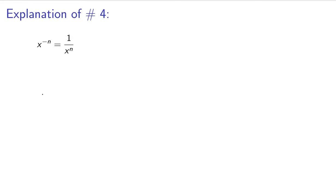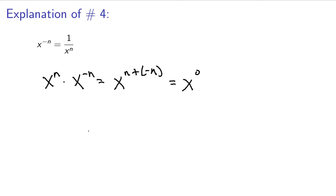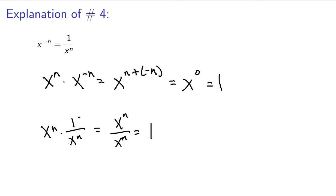x to the negative n equals one over x to the n. This is another one that is just a little bit counterintuitive at first. Let's explore why it works. If we have x to the n times x to the negative n, that's going to be the same thing as x to the n plus negative n by the basic law of exponents. n plus negative n is going to be zero, so that equals one. Now let's also look at x to the n times one over x to the n — that's x to the n divided by x to the n, and anything divided by itself is equal to one. So these two expressions have to be equal, meaning x to the power of negative n is equal to one over x to the n.